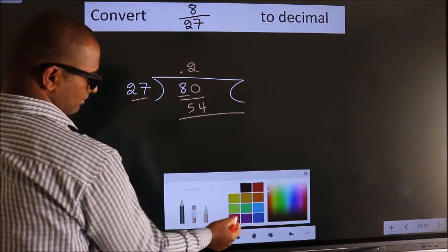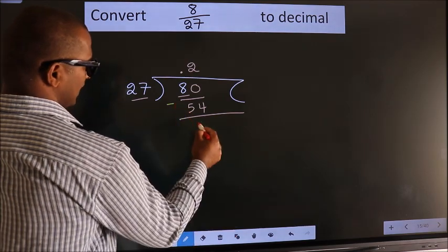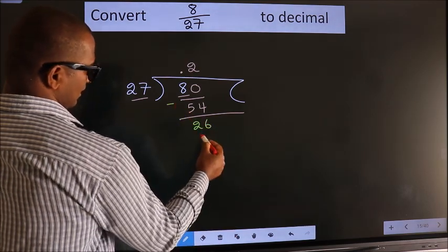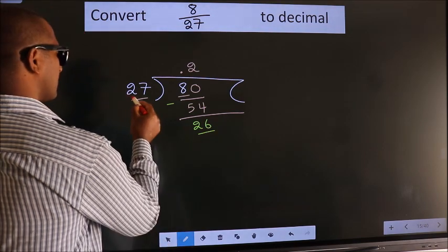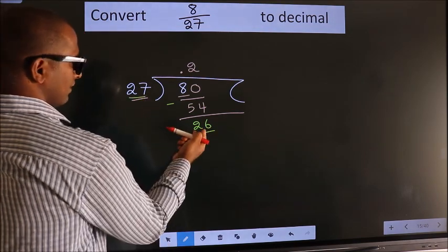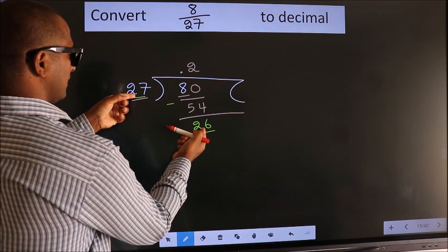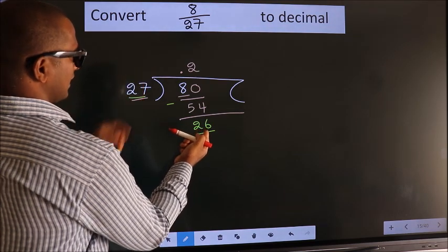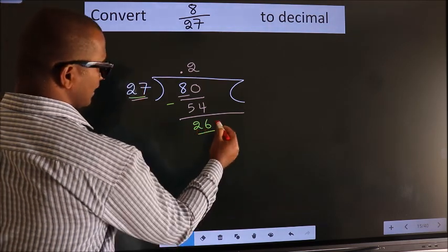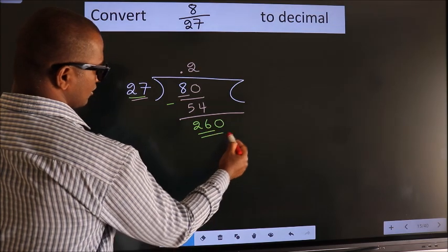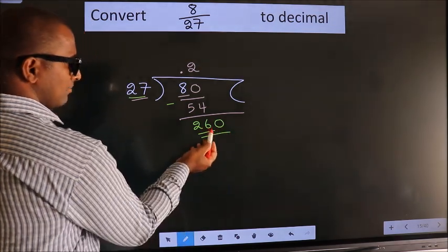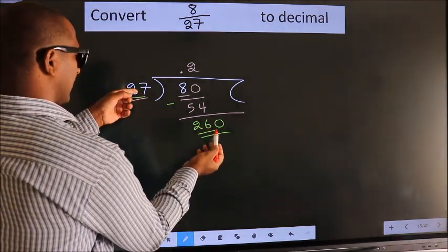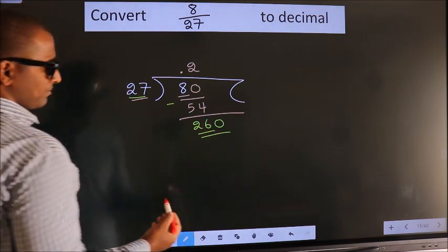Now we should subtract. We get 26 here. We have 26 here, 27. 26 is smaller than 27. We already have the decimal so we can directly take 0. So 260, a number close to 260 in the 27 table, we should go with 9.